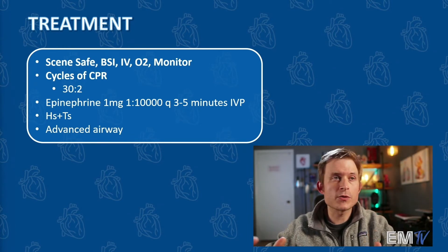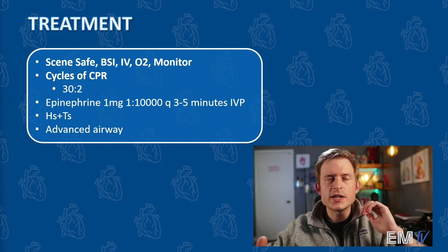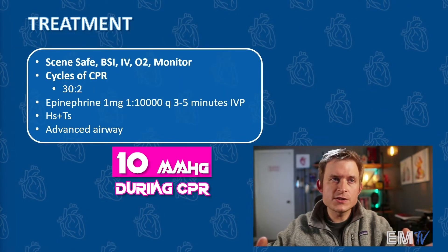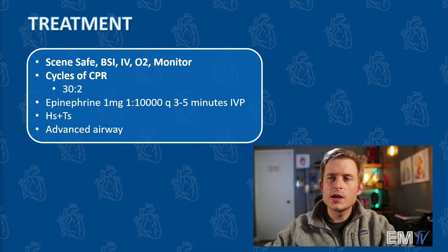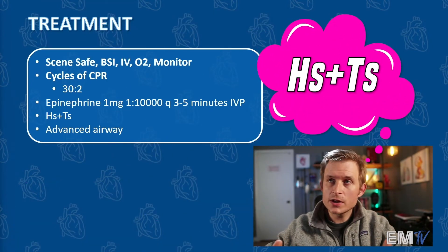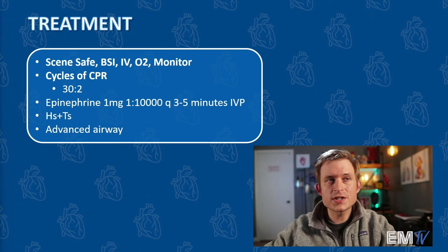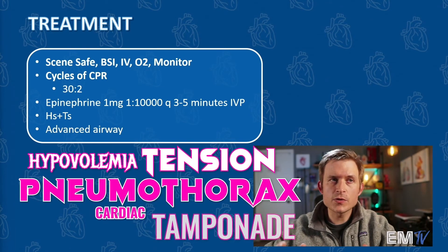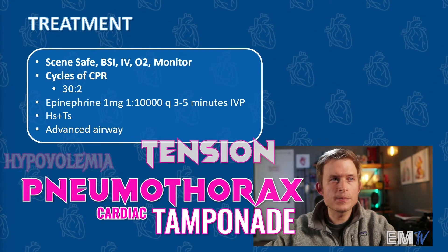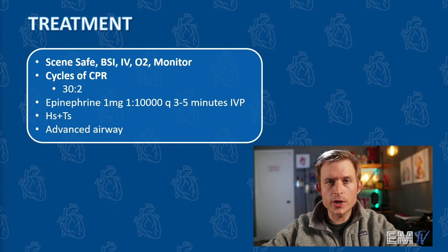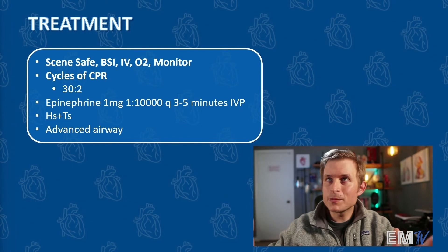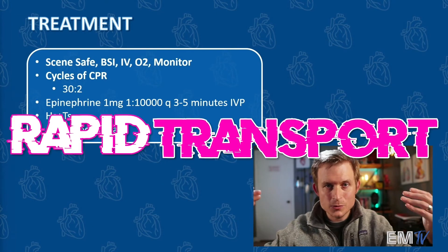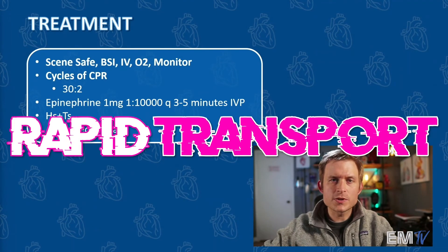We'll be making sure we're switching out our providers, putting on end tidal capnography, and trying to get a reading of 10 to assure good chest compressions. We'll be considering our H's and T's here, and it would be a good idea to stick to trauma-related H's and T's like hypovolemia, tension pneumothorax, cardiac tamponade, that sort of thing. Then we'll consider an advanced airway, and to keep yourself from rambling, rapid transport. And that's it.